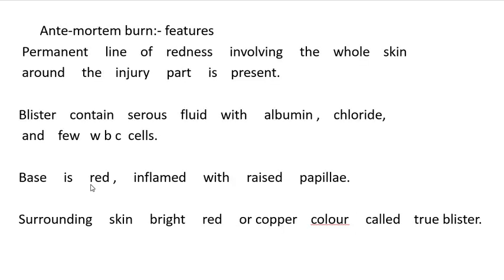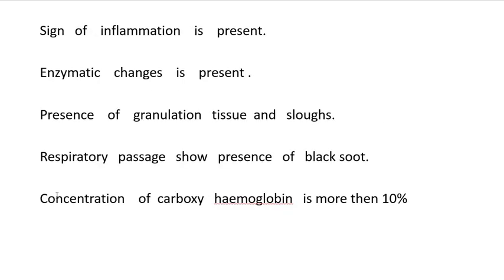Ante-mortem burn features: there will be a permanent line of redness involving the whole skin around the injured part. Blisters contain serous fluid with albumin, chloride, and a few WBCs. Base is red and inflamed with intact papillae. Surrounding skin is bright red or copper colored — called a true blister. Signs of inflammation are present, enzymatic changes are present, granulation tissue and slough are present. Respiratory passages show the presence of black sooty carbon particles. Carboxyhemoglobin concentration is more than 10%.